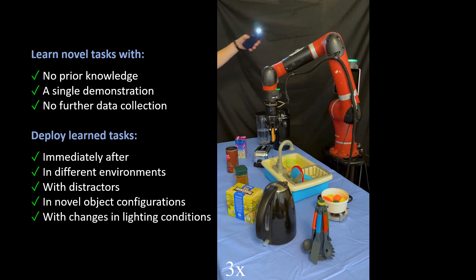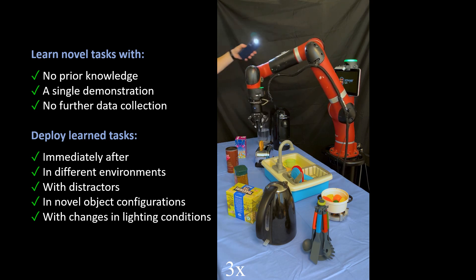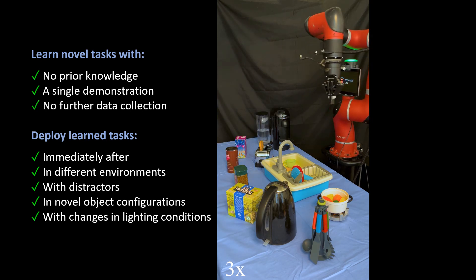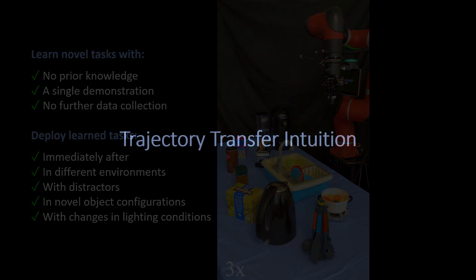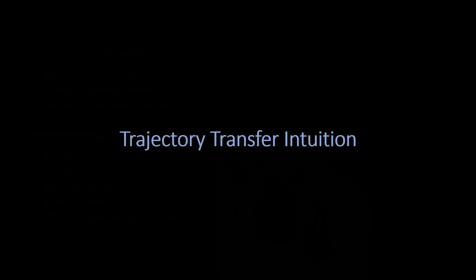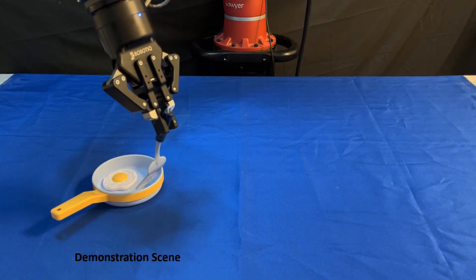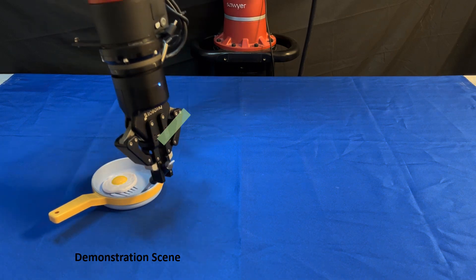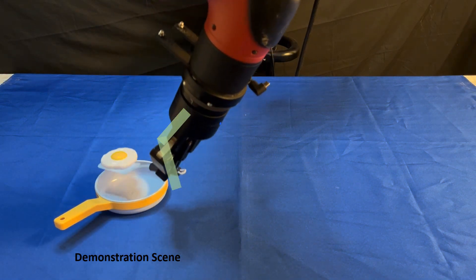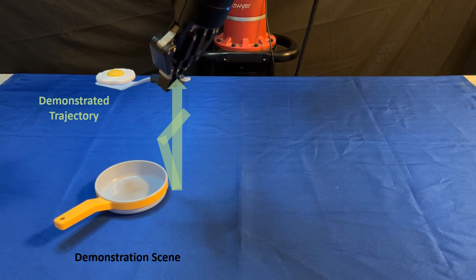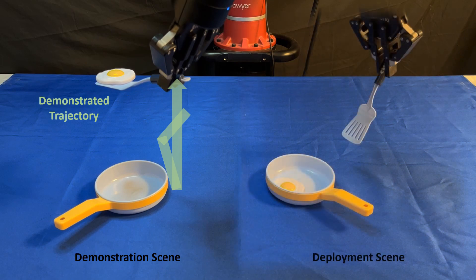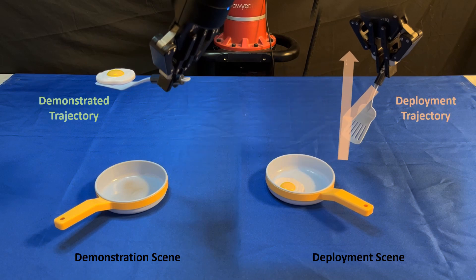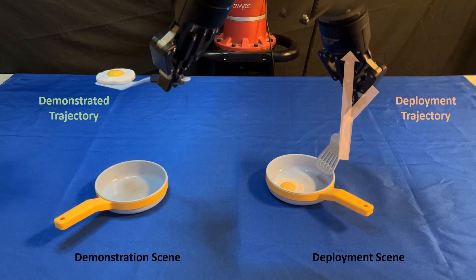In this work, we show that this is possible by modeling imitation learning as a trajectory transfer problem. Assuming only a single demonstration, trajectory transfer maps the demonstrated trajectory to a novel scene, allowing for successful task completion.